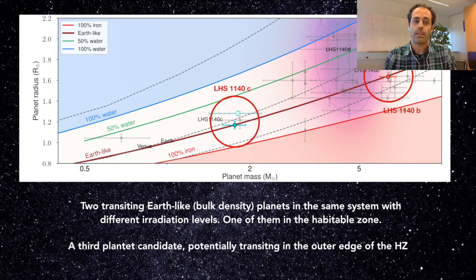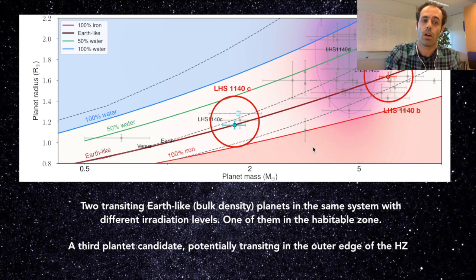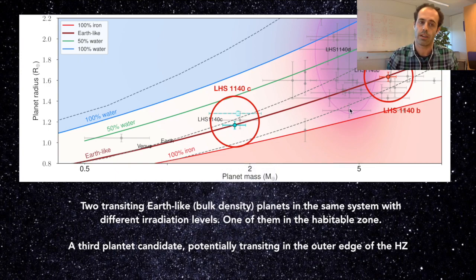This third planet is on the edge between super earths and mini neptunes and only its size will reveal on which side of the force it is. So it's located here probably in this mass radius diagram.